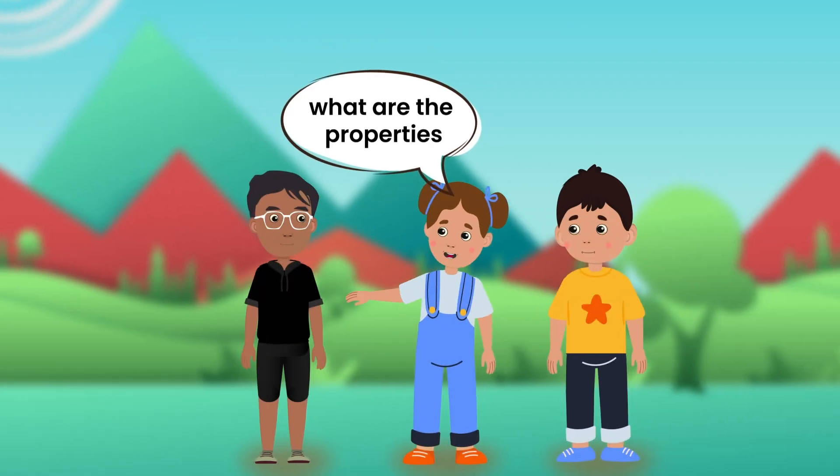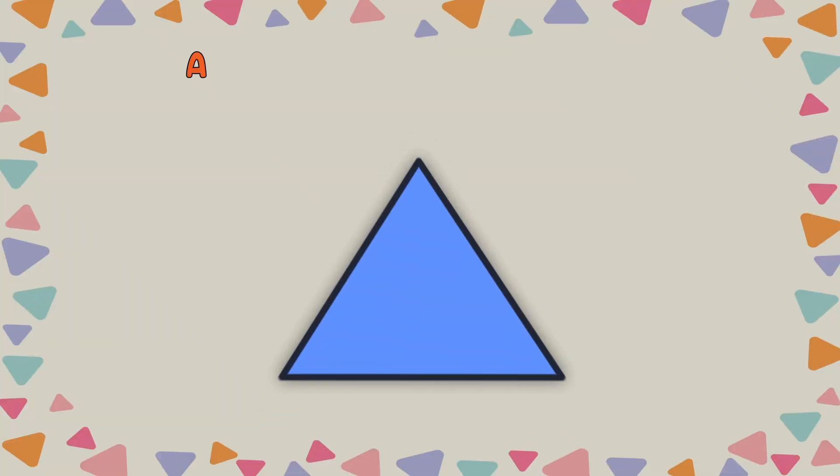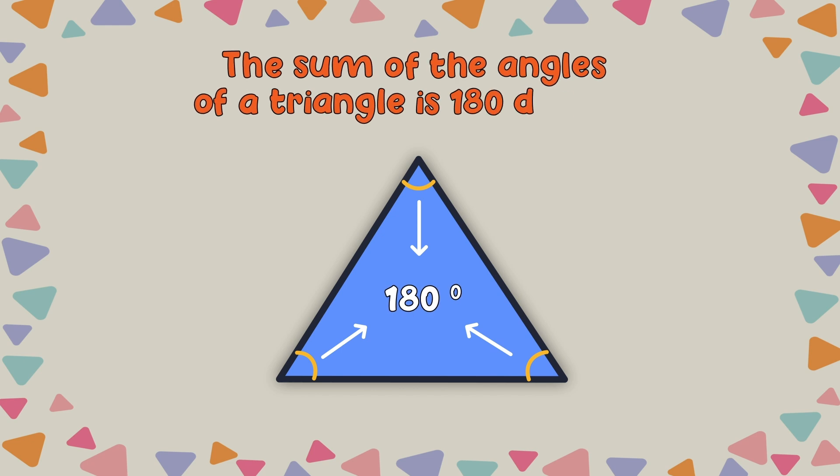Banu, what are the properties of these triangles? Anna, a triangle is a closed shape with three sides, three angles and three corners. Also, the sum of the angles of a triangle is 180 degrees.